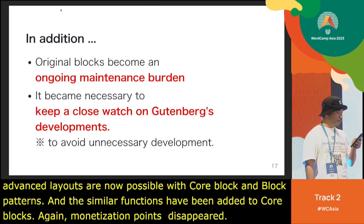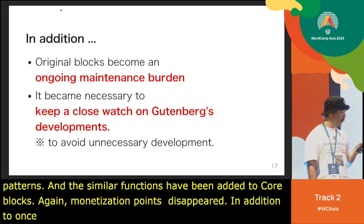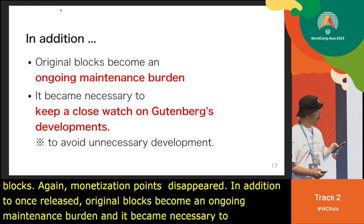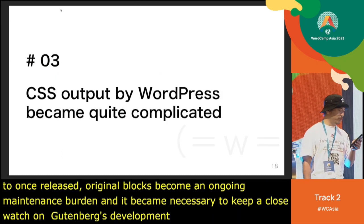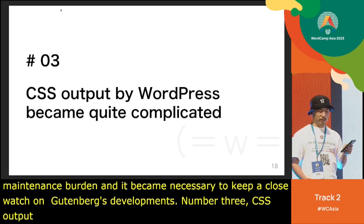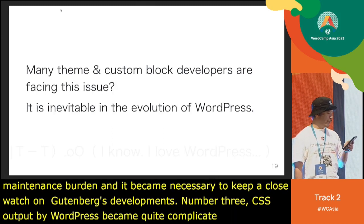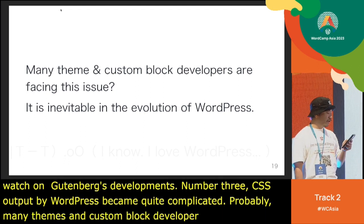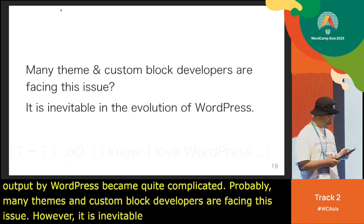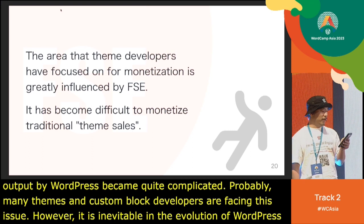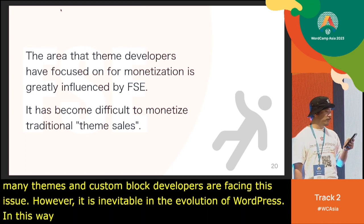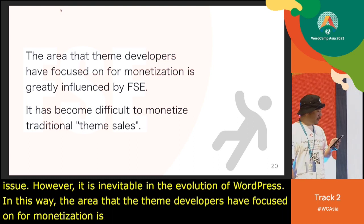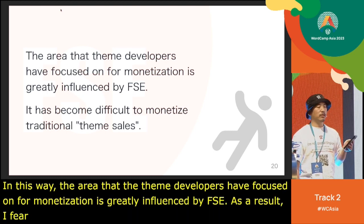In addition, once released, original blocks become an ongoing maintenance burden, and it becomes necessary to keep a close watch on Gutenberg's development. Number three: CSS output by WordPress has become quite complicated. Probably many theme and custom block developers are facing this issue. However, it is inevitable in the evolution of WordPress. In this way, the areas that theme developers have focused on for monetization are greatly influenced by FSE. As a result, I feel it has become difficult to monetize through traditional theme sales.